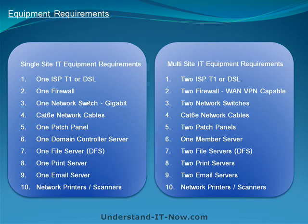You would also need a patch panel to connect your network switch to the networkable devices throughout the office, one domain controller as your primary server, one file server with installed Distributed File System services, one print server, one email server, and your network printers and scanners.